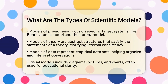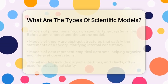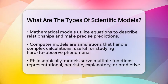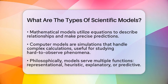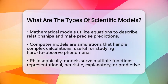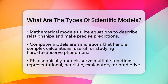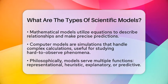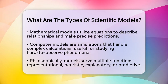Now, let's look at some common practical types of scientific models. Visual models include diagrams, pictures, and charts. They are often used for educational purposes or to give a clear understanding of a concept. Mathematical models use mathematical language and equations to describe relationships within a system.